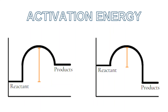A reaction always requires an initial input of energy, and this is used to break the bonds between the reactants. This is called the activation energy, and it is the minimum amount of energy that must be supplied to break the bonds in the reactants and start a reaction. We see the activation energy on any energy diagram as that hump between the reactants and the products. The activation energy is the difference between the energy of the reactants and the energy at the top of that hump in the energy diagram.